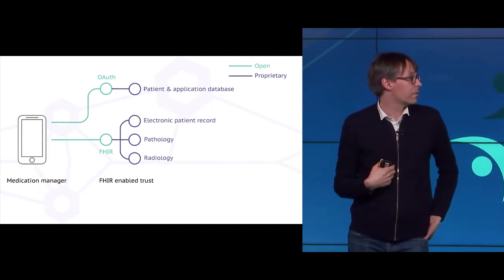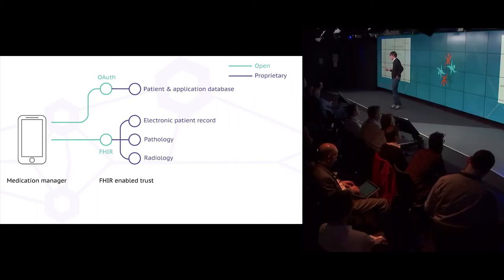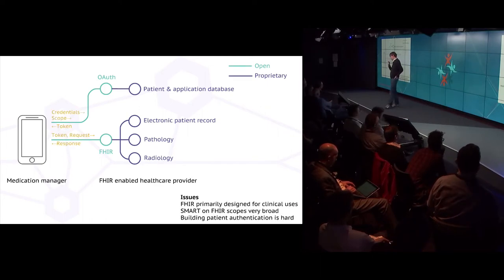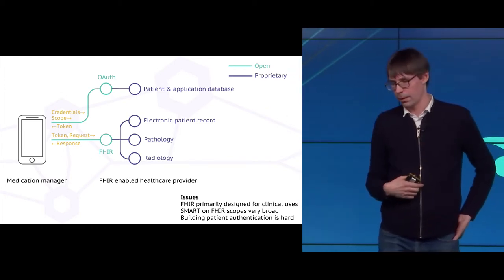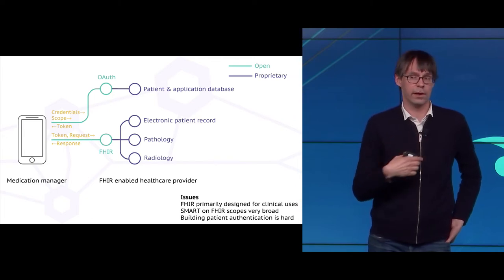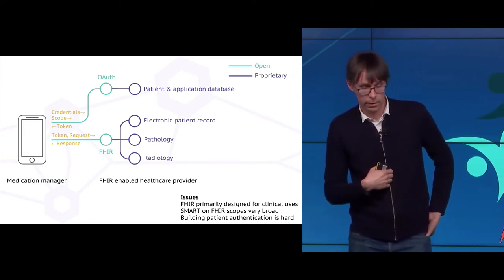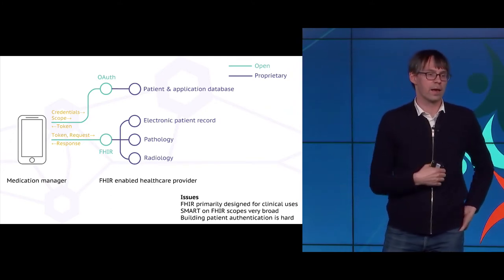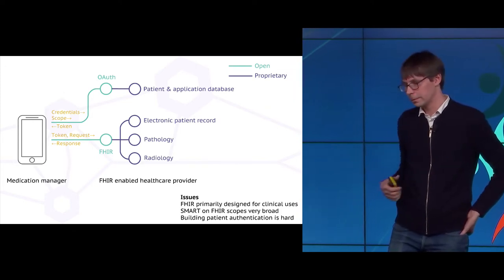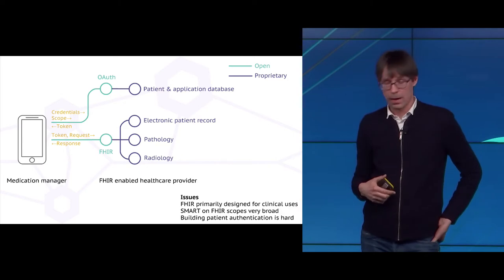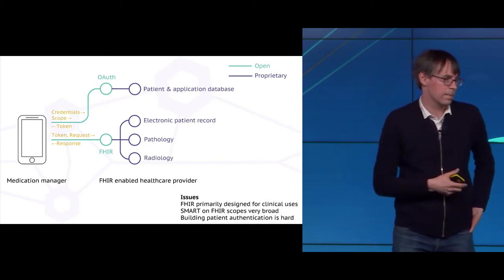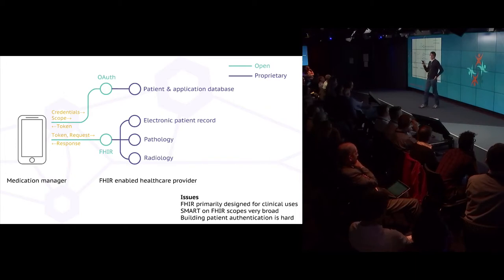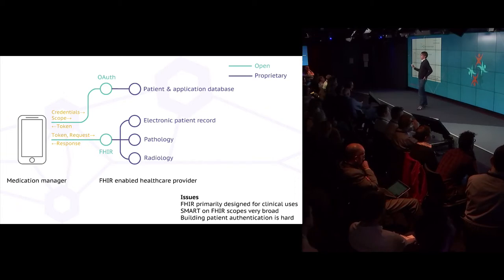You can imagine a second endpoint where the patient, with their application, logs in via OAuth. When you log in via OAuth, you give your credentials — your username and password — and you say what data you would like to access. In the case of FHIR, you could say 'I would like to view my patient record.' OAuth validates your username and password. If correct, and the scope — the rights to see a particular record — is valid, it sends back a token. A token is a cryptographic piece of data you can then exchange for the actual data. So your authentication system doesn't hold any patient data; it just determines whether a patient has consented to a particular choice.